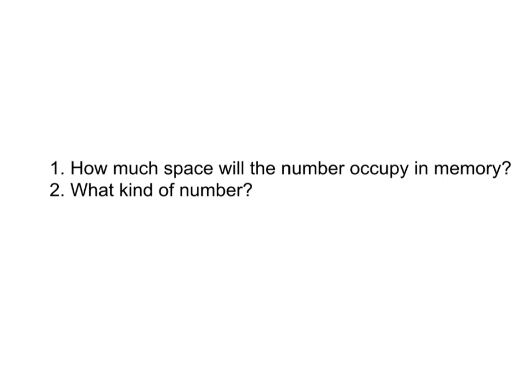Every programming language has a way for you to specify the size in bits that a number will occupy, as well as what kind of number it actually is. In C, there are specific keywords that are used to define these different kinds of numbers and their sizes. We will go over sizes a bit later, but for right now let's just discuss the different kinds of numbers.